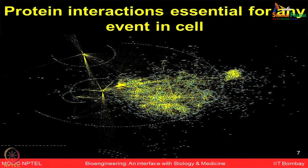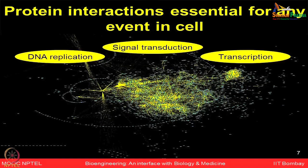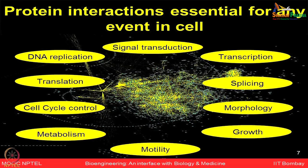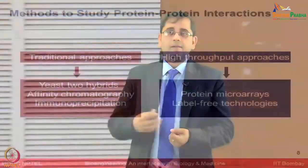Protein interactions are crucial for virtually every event happening in the cell, whether it is signal transduction, DNA transcription, translation, replication, cell cycle control, various metabolic hubs, morphology, splicing, growth, or mortality. Many of these biological events depend on biomolecular interactions — especially protein-protein interactions. We have discussed the two broad categories to study protein interactions, and the latest technologies including protein microarrays and label-free biosensors, which allow biologists to find information in a much more dynamic, high-throughput, and precise manner.